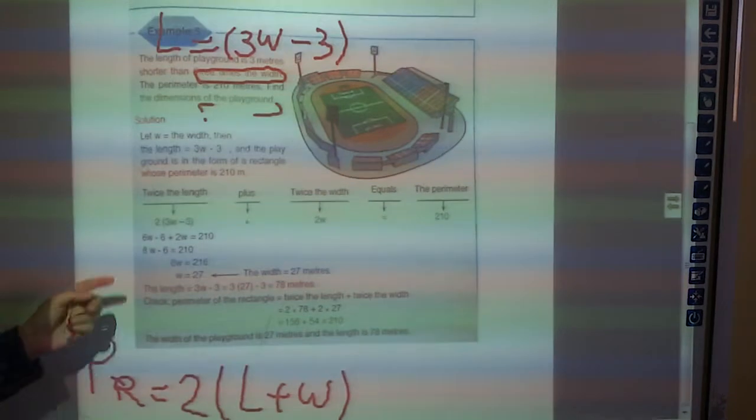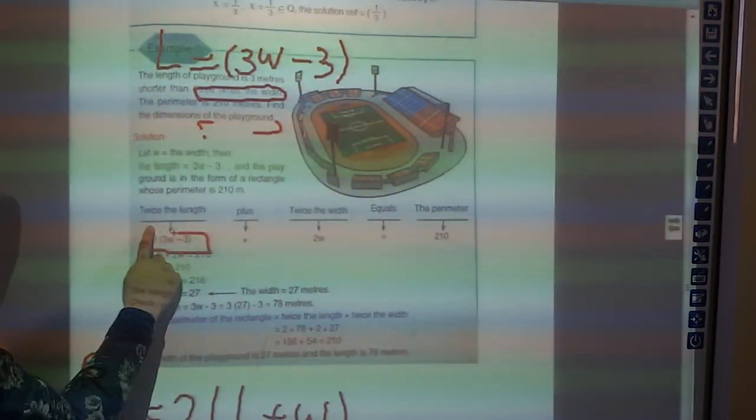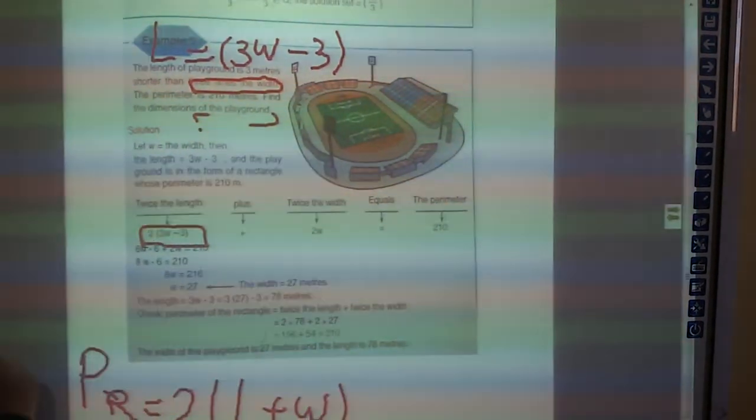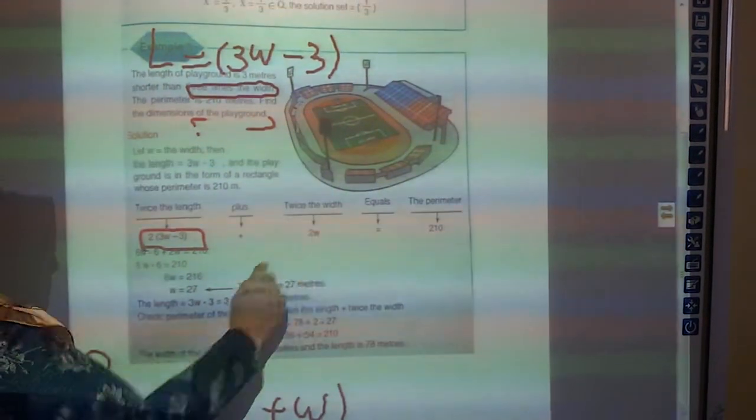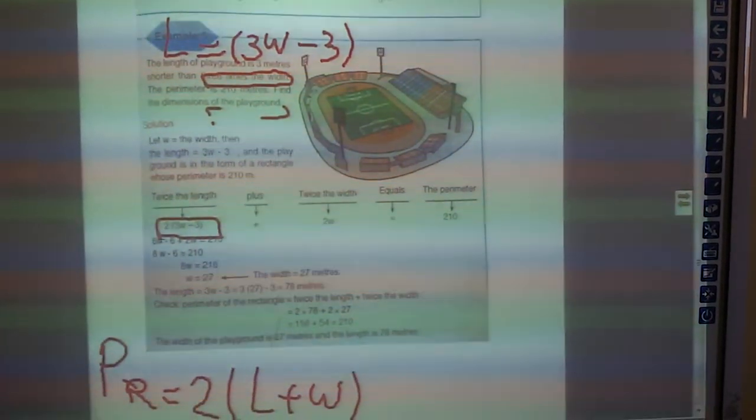So how can I write it? It will be 2 and bracket, 3W minus 3 which is the length, plus 2W equal to 210. Then I'm going to solve it. Then I'm going to solve this equation.